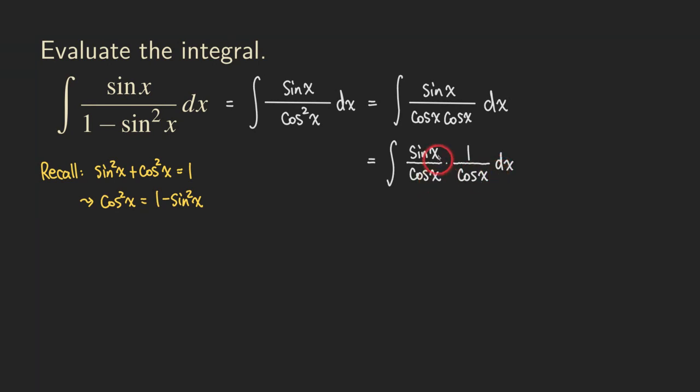As you can see here, we write the whole fraction as a product of two fractions. Sine x times 1 gives us the sine x. And then cosine x times cosine x gives us the cosine square x.